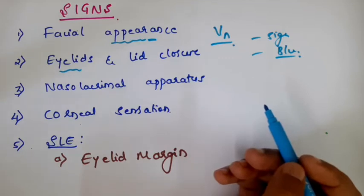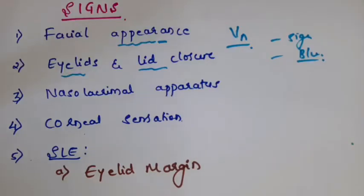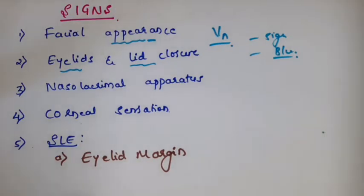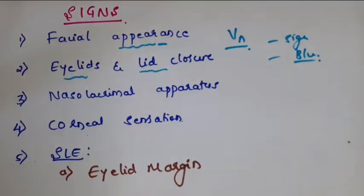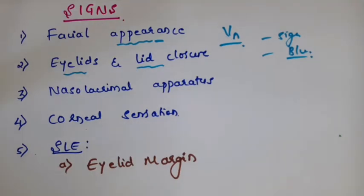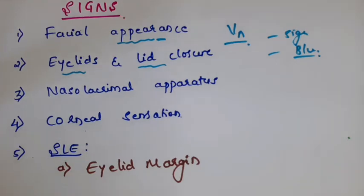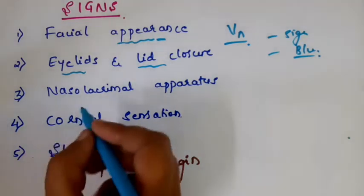Examine the eyelids - any abnormality like entropion, trichiasis, or blepharitis can lead to corneal ulcer formation, so you should take care of the eyelids before treating the corneal ulcer. Also look for lid closure problems secondary to either proptosis or lid retraction. These things should be taken care of when you are treating the corneal ulcer.